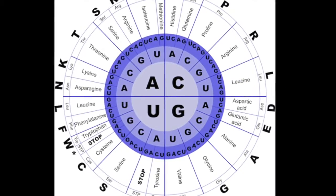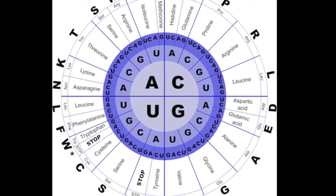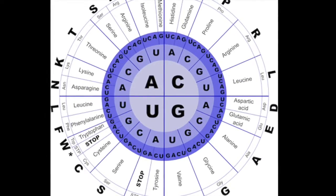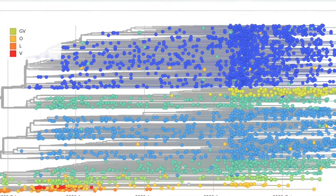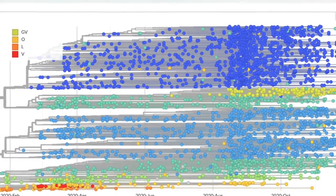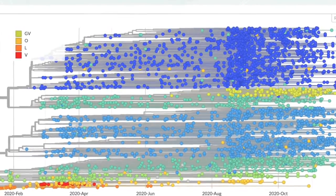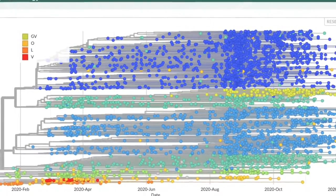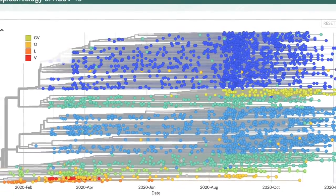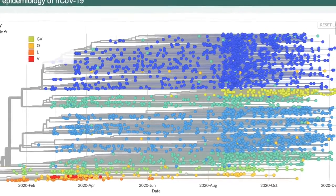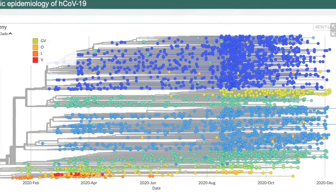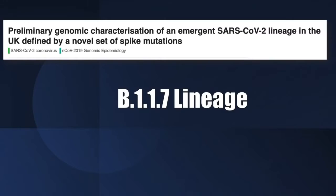RNA viruses mutate a lot — that's their trademark. Scientists have been sequencing the genes of the coronavirus throughout 2020, looking for changes in the genetic code and creating a type of family tree. The mutation in England has been called the B.1.1.7 lineage.